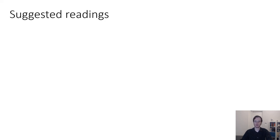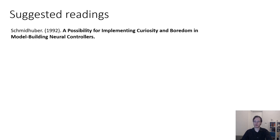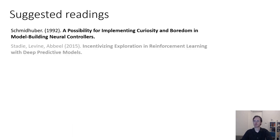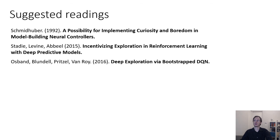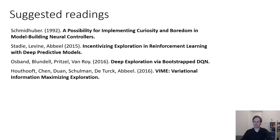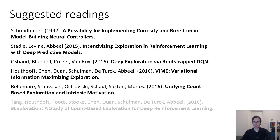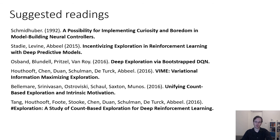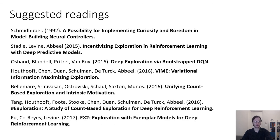If you want to learn more about this material, a few suggested readings: an older paper by Schmidthuber called The Possibility for Implementing Curiosity and Boredom in Model-Building Neural Controllers, which introduces exploration methods based on model error; a paper on incentivizing exploration in reinforcement learning with deep predictive models; the paper on posterior sampling and deep exploration via Bootstrap DQN; the VIME paper; the count-based and pseudocount-based exploration paper; and the hashing paper and the EX2 paper.